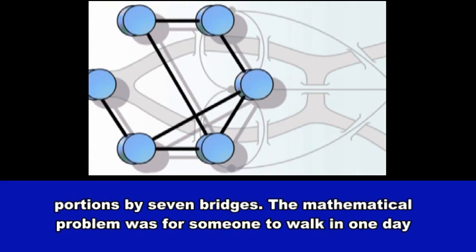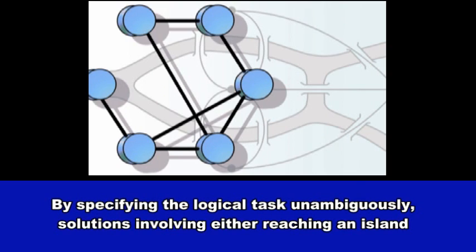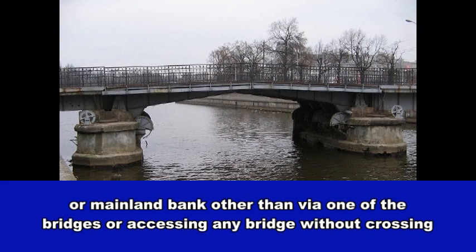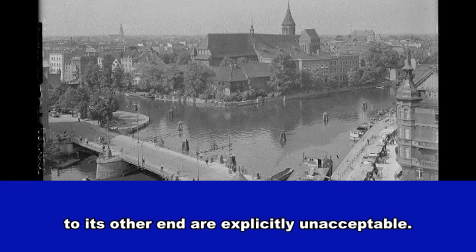The mathematical problem was for someone to walk in one day through the city and cross each of the seven bridges once and only once. By specifying the logical task unambiguously, solutions involving either reaching an island or mainland bank other than via one of the bridges or accessing any bridge without crossing to its other end are explicitly unacceptable.